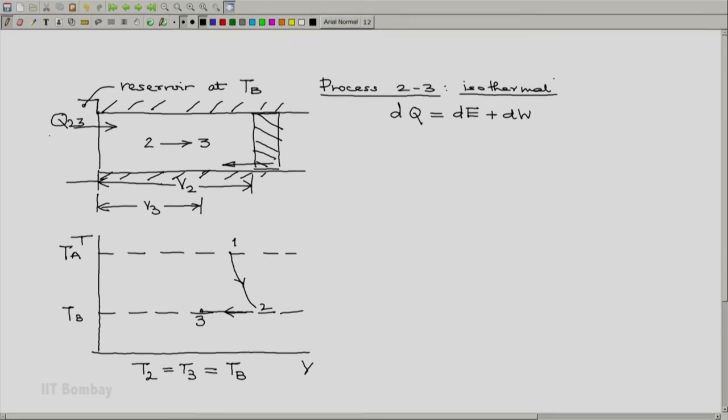We will make the same assumption as earlier that dE equals dU—no change in potential energy, kinetic energy, etcetera. And because it is a reversible process and our working fluid is a gas, the only work interaction allowed is the expansion work. So dW is P dV. This equation reduces to dQ equals dU plus P dV.